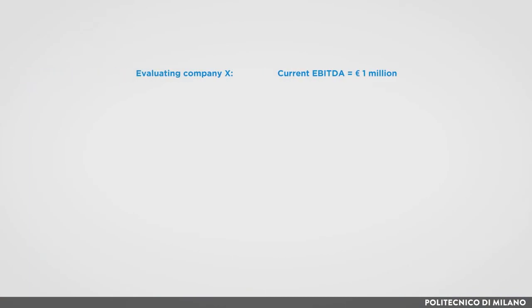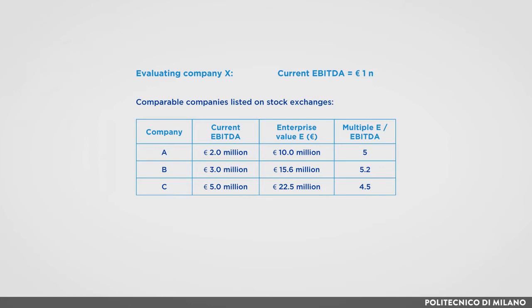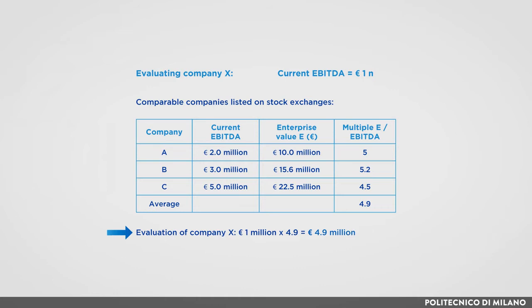Let's make an example. Assume we want to evaluate company X. We know that the current EBITDA — earnings before interest, taxes, depreciation, and amortization — is equal to 1 million euro. We found three similar companies, meaning in the same industry, similar size and age, listed on stock exchanges. Considering their current EBITDA and their current market capitalization — the market price of their shares times the number of shares outstanding — we find that on average the comparable companies are traded at 4.9 times the EBITDA. Therefore, a first measure of company X's value could be 4.9 times 1 million euro, which is 4.9 million euro. A similar estimation can be made looking at the multiples of the acquisition value for comparable companies, if available.